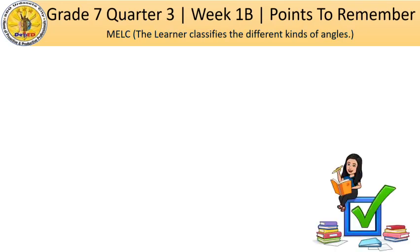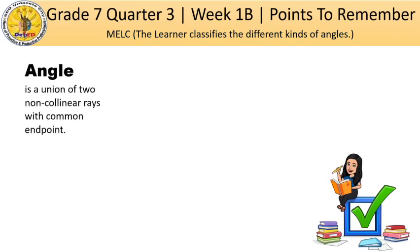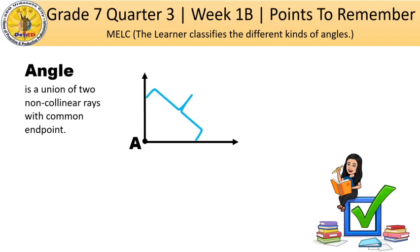So let's define first what is an angle. An angle is a union of two non-collinear rays with a common endpoint. Looking at the illustration, we have two non-collinear rays with a common endpoint labeled as capital letter A — that is point A. These two non-collinear rays are called the sides of an angle, and this common endpoint is called the vertex. Please take note of the parts of an angle.